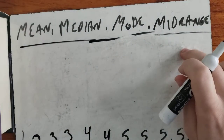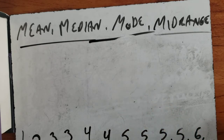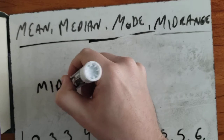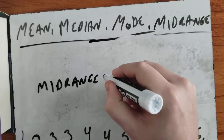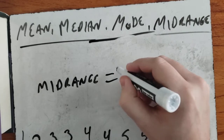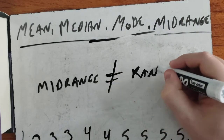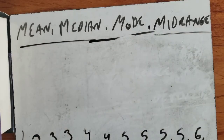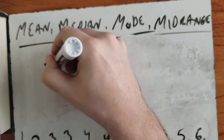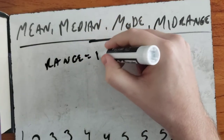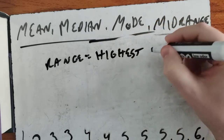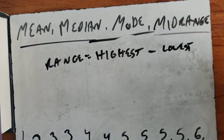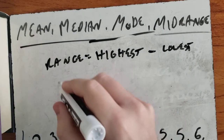Our last one is mid-range. Now, the mid-range is not the range — they don't equal the same thing. The range is your highest number minus your lowest number. But that's not what we're doing here.